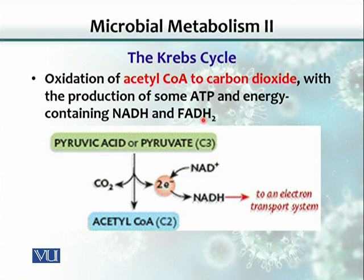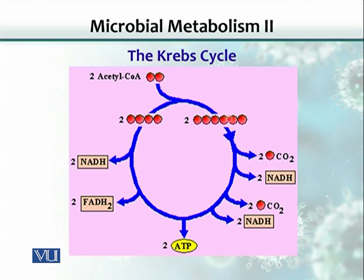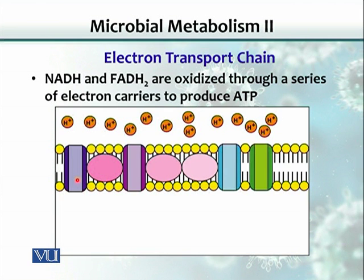The hydrogen and electrons captured during the Krebs cycle are used to make lots of ATP at the end of the Krebs cycle. Another version of the Krebs cycle shows that acetyl-CoA gets channeled in, the molecules undergo various modifications, and different NADH and FADH2 molecules are produced. These are then used by the electron transport chain to make ATP.